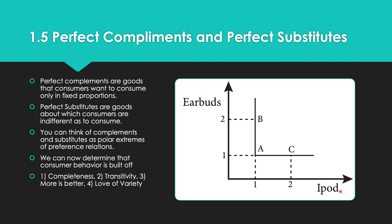A perfect complement example: if you want to listen to music privately on an iPod, earbuds are the perfect complement — you plug them in and they provide your own surround hearing. Shoes are another example of perfect complements because they go one-and-one on each foot. To cap it off, consumer behavior here is governed by completeness, transitivity, more is better, and love of variety — which is why this is a perfect complement.